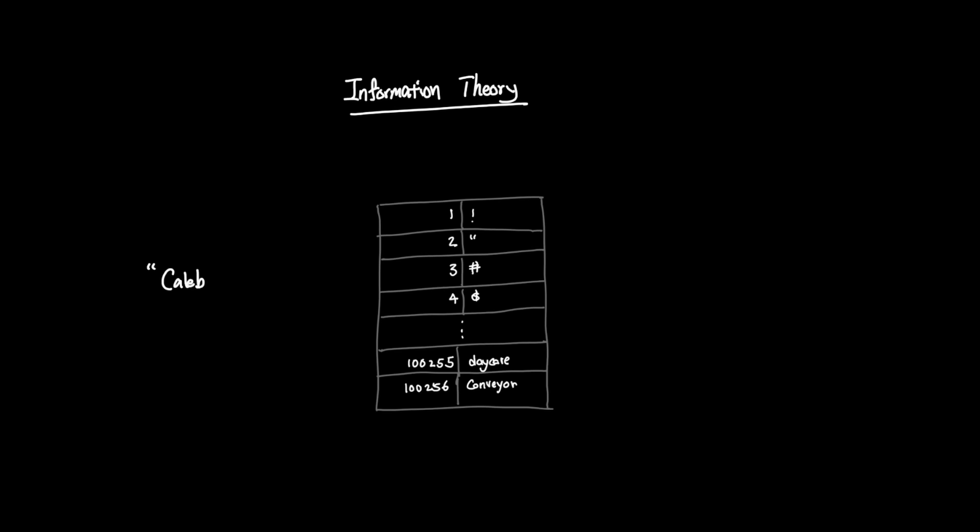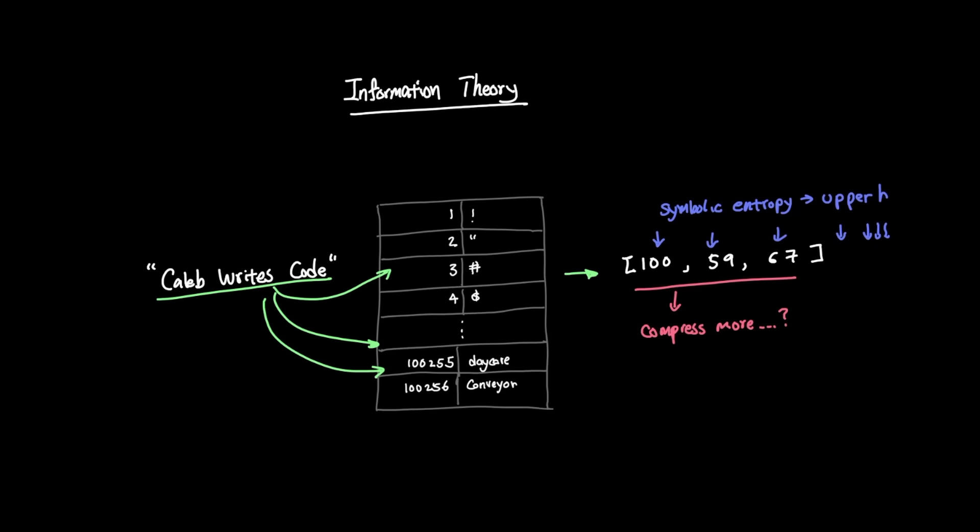For example, the sentence 'Caleb writes code' cannot be compressed further than the symbolic representation of each word. So if Caleb has a token ID of 100, writes has 59, and code has 67, then you really can't go beyond this vector to compress it without losing its meaning. And this symbolic entropy puts an upper bound to how much information can be compressed in representation.